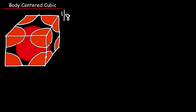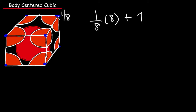Now let's talk about the body centered cubic structure. There are 2 atoms per unit cell. Every atom at a corner is 1/8 of an atom, and there are 8 corners, so (1/8) × 8 = 1. Plus the one whole atom in the middle gives 1 + 1 = 2 atoms per unit cell in the body centered cubic structure.